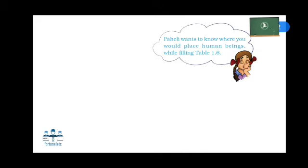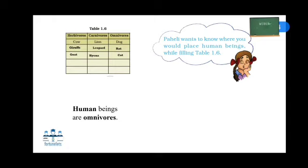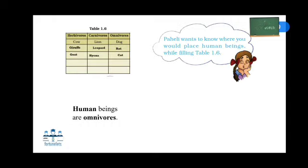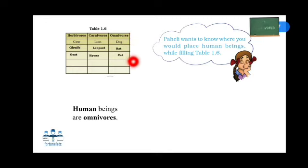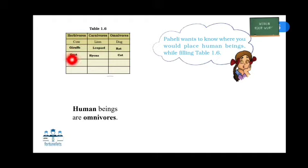Based on the concepts that we have learnt, let's fill in the activity given in your textbook. Here, animals are classified into three different categories according to their food habits: herbivores, carnivores, and omnivores. According to their food habit, we are going to fill in the animals in the given places.